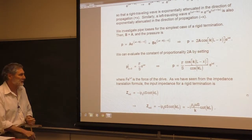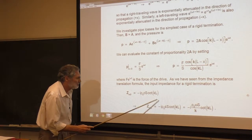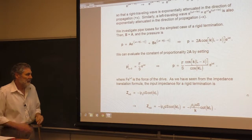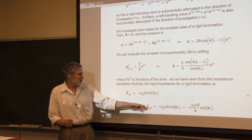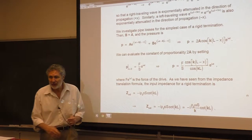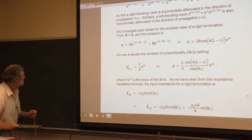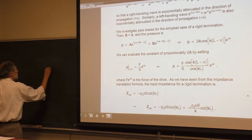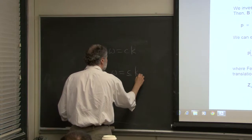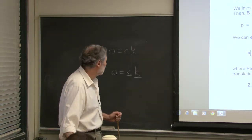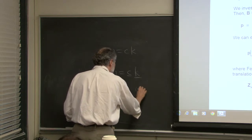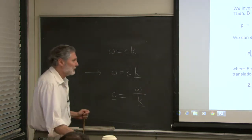Now we're going to generalize this — we let K become complex. We need to be careful because to have a solution to the lossy wave equation, C has to become complex too, since ω = CK. So the complex C is simply ω over the complex K. If we don't do this, we won't have a solution to the wave equation.